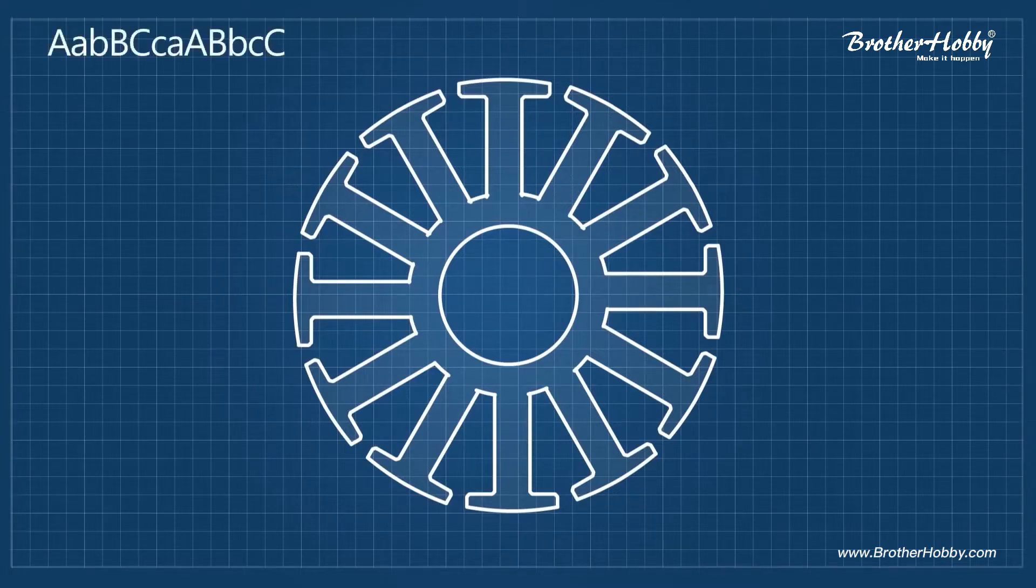These letters represent the phases. Capital letters represent winding in one direction and the small letters that the winding have to be in the other direction.